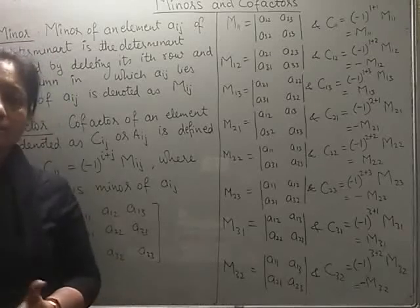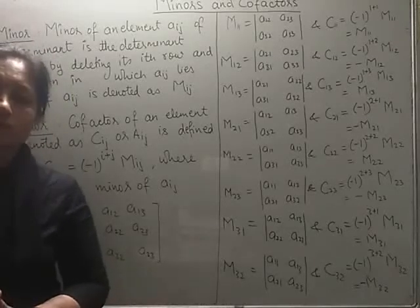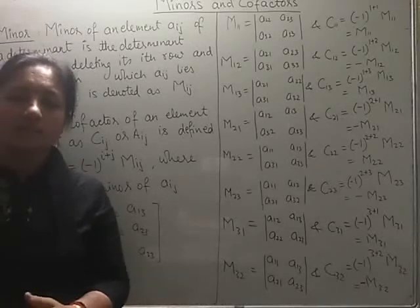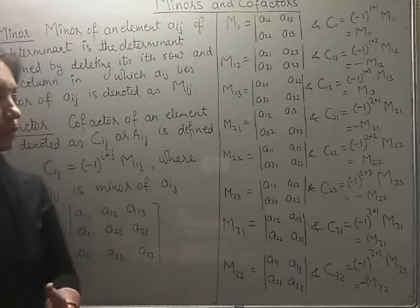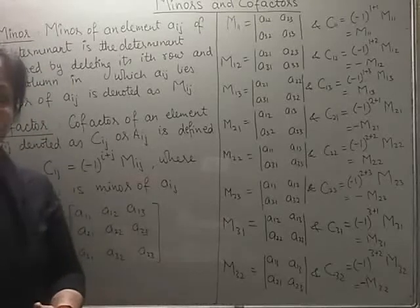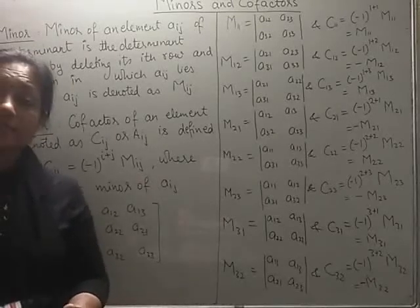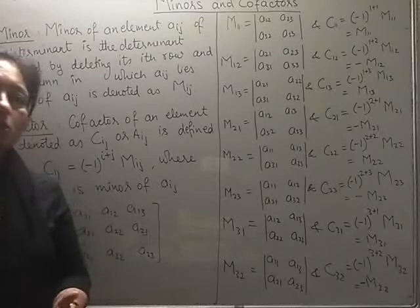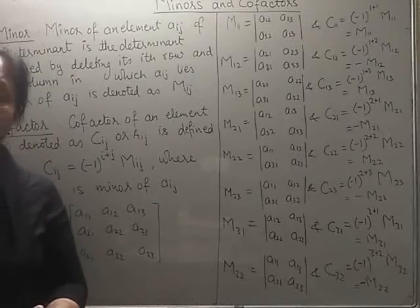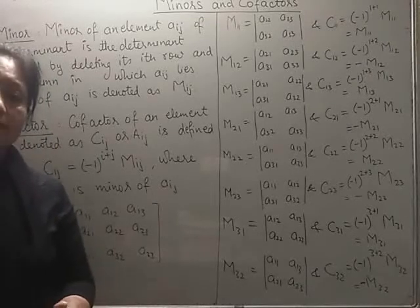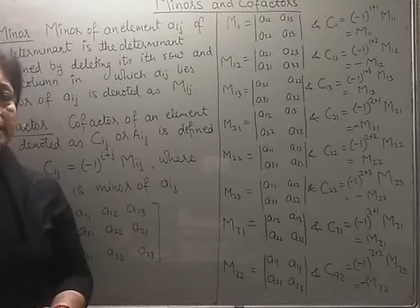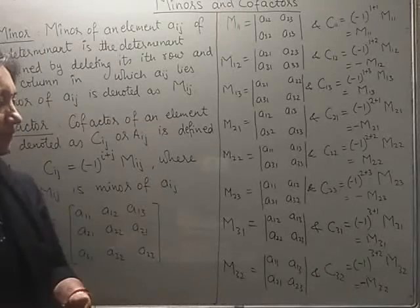Let us quickly see what all we have gone through in determinants till now. We have learnt how to evaluate them, how to simplify them using properties, and we saw how the concept of determinants can be used to find the area of a triangle whose vertices are given.